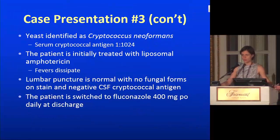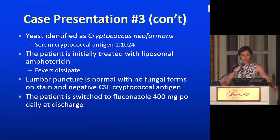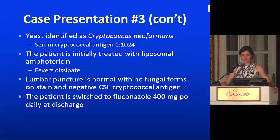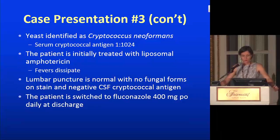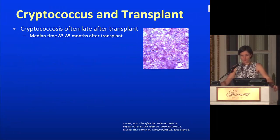For other fungal infections, you need to think about the epidemiology and geography of the patient. Coccidiomycosis is an important cause of fungal infection after renal transplant in Arizona, with an estimated incidence of 3.8 to 6.9%. Patients transplanted in Arizona get serologies checked before transplant and get prophylaxed if they've been exposed. Coccidioides is endemic in specific geographic regions, so where you're located matters. Back to our case — the yeast was identified as Cryptococcus neoformans. The patient was initially treated with liposomal amphotericin, fevers resolved, and a lumbar puncture was normal — so it was just fungemia, not meningitis. He was switched to fluconazole 400 mg by mouth daily at discharge.